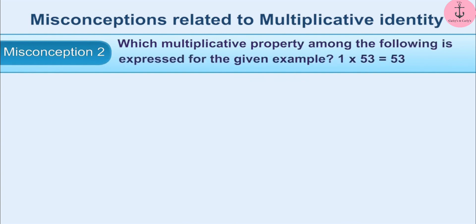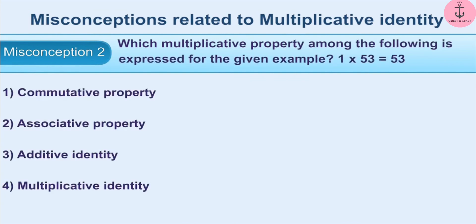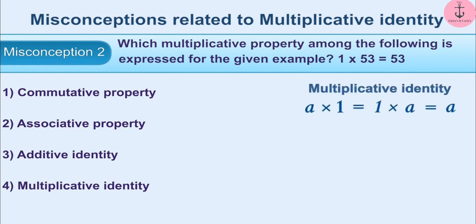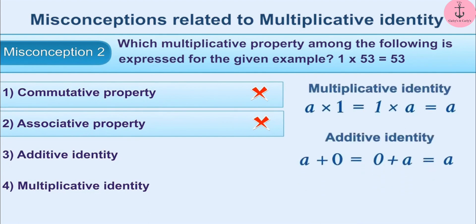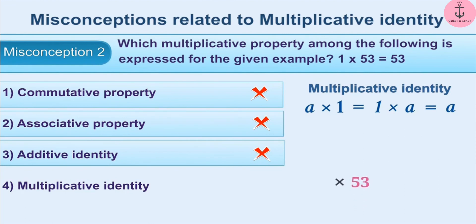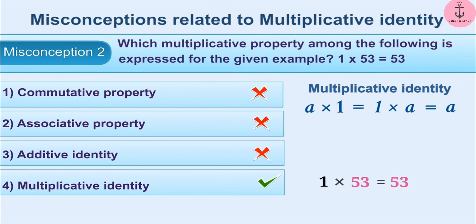Misconception 2: Choose the correct property for the example 1 multiplied by 53 is equal to 53. Due to lack of proper understanding of multiplicative identity, options 1 and 2 are sometimes chosen incorrectly. Getting confused between additive identity and multiplicative identity, option 3 is also incorrectly given as an answer. The correct understanding is: when a number is multiplied by 1, the result will be the same number — this is the multiplicative identity. Therefore, option 4 is the correct answer.